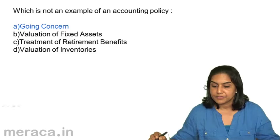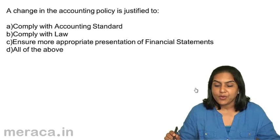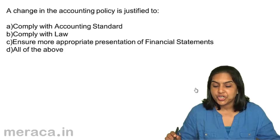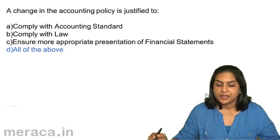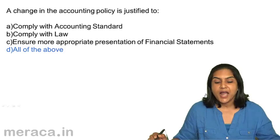A change in accounting policy is justified to: A. Comply with an accounting standard, B. Comply with law, C. Ensure more appropriate presentation of financial statements, D. All of the above. The answer is D — all of the above. A change in accounting policy is justified to comply with the law, to comply with an accounting standard, and to ensure a better presentation of the financial statements.